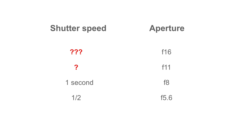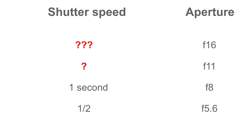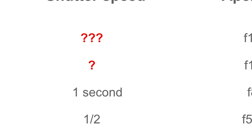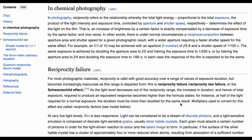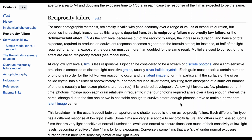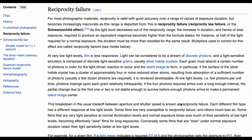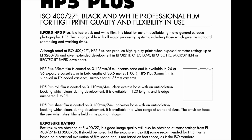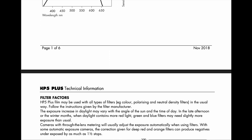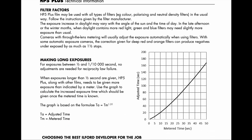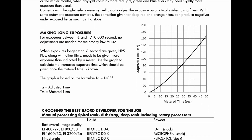You have to compensate by giving substantially more exposure. I've added a link to the Wikipedia page covering this in case you want to know the science behind it. Here's the data sheet for Ilford HP5, showing the graph for reciprocity failure compensation.